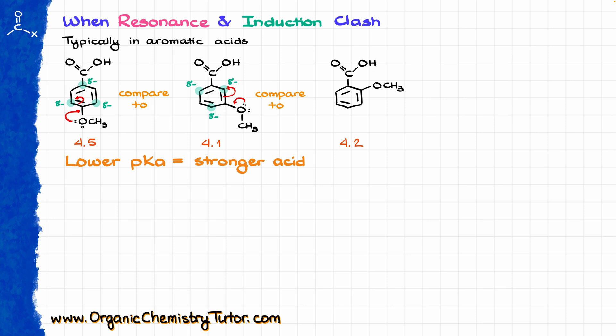That partial negative charge is not going to be directly next to my carboxylic acid, so the carboxylic acid will start feeling some of the inductive effect. But in my last case, where resonance structures push the electron density towards the same positions as in the first molecule, I still don't see a pKa value of roughly 4.5 like in the first example, because due to its proximity, the OCH3 actually exhibits a more significant inductive effect that is felt by the carboxylic acid. Which means that overall it is not as weak as the first example, but not as strong as the middle one, due to the resonance and inductive effects working against each other and clashing.